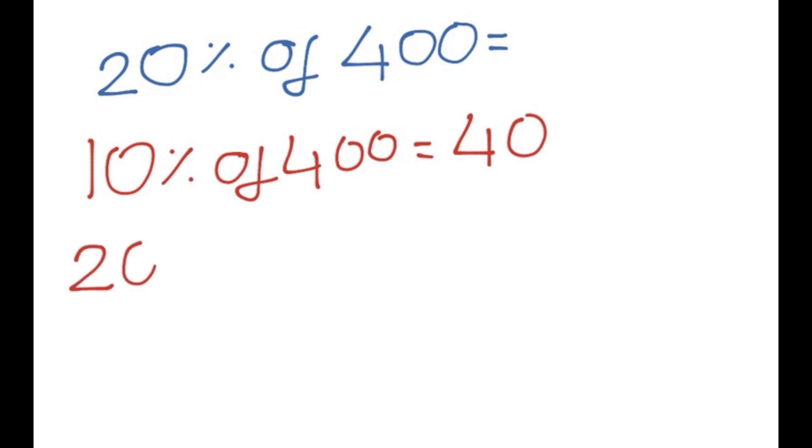And the way to do that is just to double the answer to 10% of 400 because 20% is double of 10%. So we just times this by 2. And 40 times 2 is 80. And there we have it.